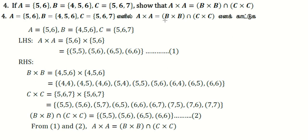Now we take B×B and C×C and find their intersection. First, B×B. B = {4,5,6}. The cross product gives: (4,4), (4,5), (4,6), (5,4), (5,5), (5,6), (6,4), (6,5), (6,6).